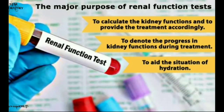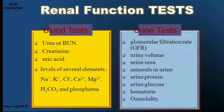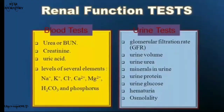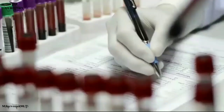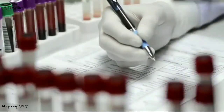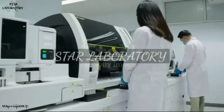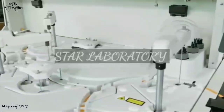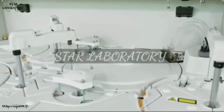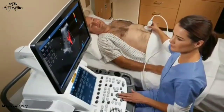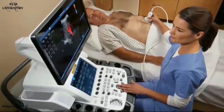The renal function test includes several analytes — for example, serum urea level, serum creatinine, uric acids, serum electrolytes, and other components. We have discussed these in detail in our STAR laboratory in previous chapters, so if you have missed that, please visit our channel for more details. Apart from this, we can also perform ultrasound scanning, intravenous urogram, and other special tests for the detection of kidney failure.